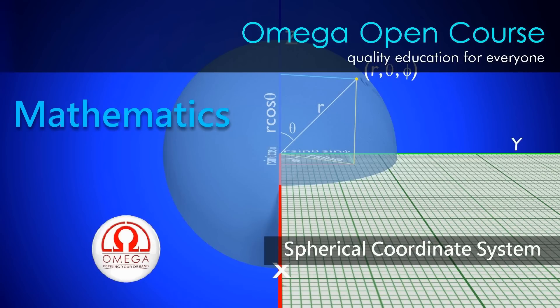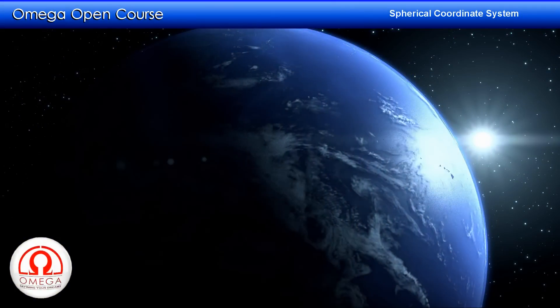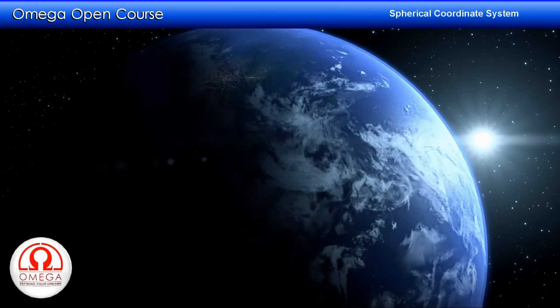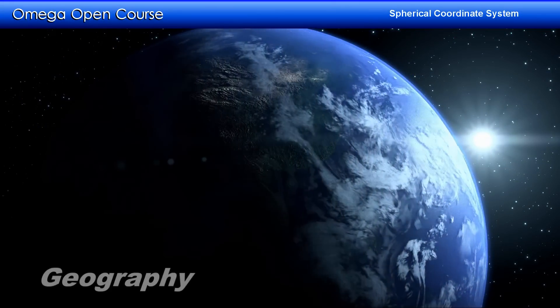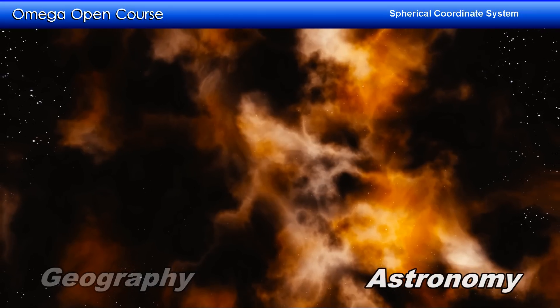Welcome to Omega Open Course. In this video we will be discussing the spherical coordinate system and how to transform Cartesian coordinates and spherical coordinates into each other. The spherical coordinate system has many applications in various fields including geography, astronomy, mathematics and physics.